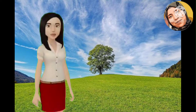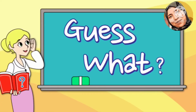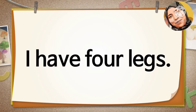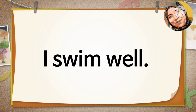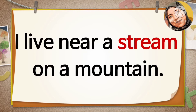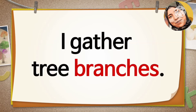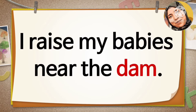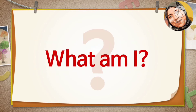Now, let's guess: what am I? I am an animal. I have four legs. I swim well. I live near a stream on a mountain. I gather tree branches and make a dam with them. I raise my babies near the dam.